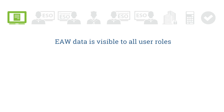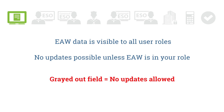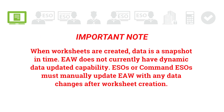EAW is routed to user roles and not specific users. Anyone in the routing can see a candidate's EAW, but they are unable to make updates unless the EAW status is in their user role — the fields are grayed out. Note: when worksheets are created, data is a snapshot in time. EAW does not currently have dynamic data update capability; ESOs or Command ESOs must manually update EAW with any data changes after worksheet creation.